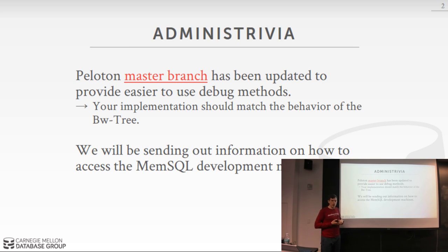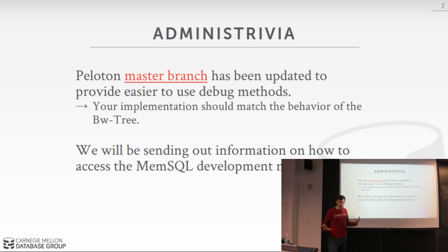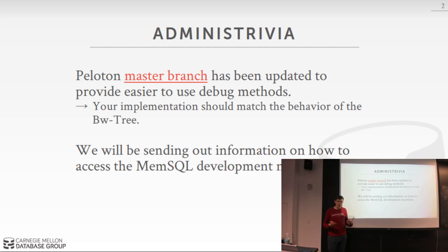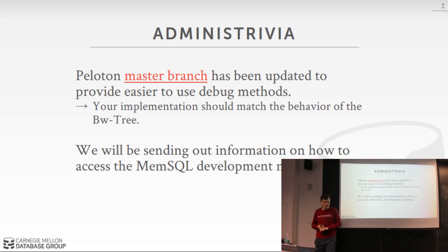I'll send out an email today or tomorrow with information on how to get access to the machines available for the course. When I first taught the course in 2016, MemSQL graciously donated three machines. Each machine has two CPU sockets with 16 threads per socket plus hyper-threading, giving 24 threads total, and 128 gigabytes of RAM. You have root access and the machines get wiped every 24 hours, so you can't do any real damage. I'll post access instructions on Piazza.